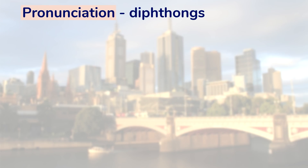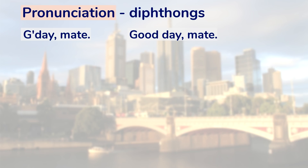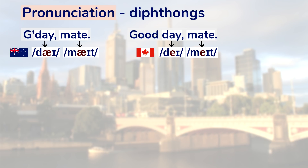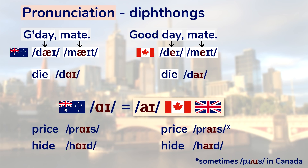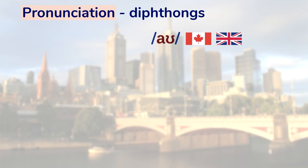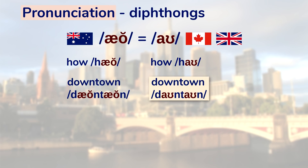The most noticeable feature of Australian English pronunciation is probably its diphthongs. An Australian greeting you've probably heard is 'G'day' or 'G'day mate.' If I tried to say it, it would sound like 'Good day mate.' Listen to the diphthongs: 'Good day' vs. 'G'day'; 'Mate' vs. 'Mate.' The word 'day' is not to be confused with 'die.' The equivalent of the I diphthong is different in Aussie English: 'Price' vs. 'Price'; 'Hide' vs. 'Hide.' There's also a different pronunciation of the OW diphthong: 'How' vs. 'How'; 'Downtown' vs. 'Downtown.'